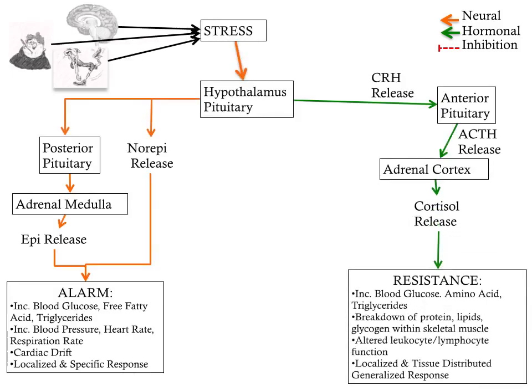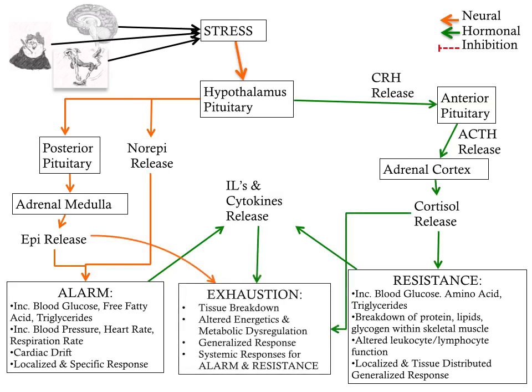The stress is still causing the alarm and resistance phases — nothing has changed — which means we have an ever-increasing level of inflammatory signals. This leads to excessive tissue breakdown, excessive alteration of energetics, and metabolic dysregulation. We go from a generalized response to a systemic global response. It is the systemic global response that leads to the diseased state — not an exposure to a pathogen, not an exposure to a stress, but the fact that so much tissue breakdown is occurring that everything is undergoing an inflammatory response.